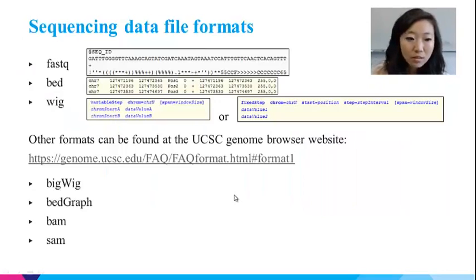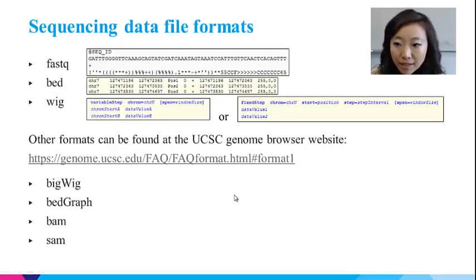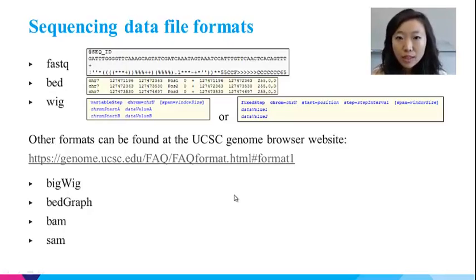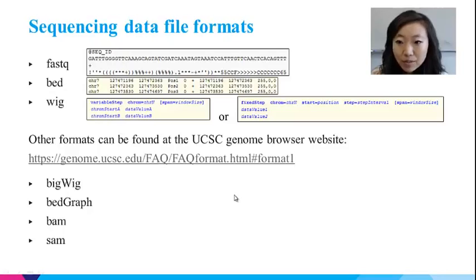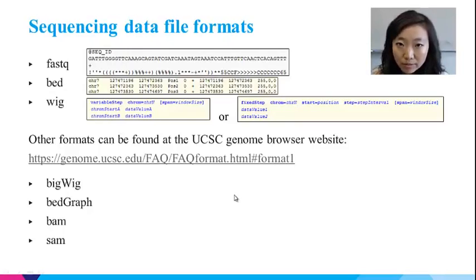Now I want to talk about the sequencing data format. The most common data formats you will encounter are listed here. The FASTQ format stores raw sequences. For each short sequence, four lines of information are written in the FASTQ file. The first line starts with '@' and is the sequence ID, usually generated by the machine. The second line contains the sequence of the short read in ACTG letters. The third line starts with a '+' symbol and is often optional. The fourth line contains the same number of symbols as the sequence and encodes the quality value.